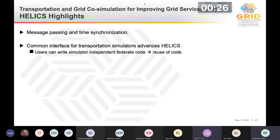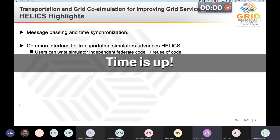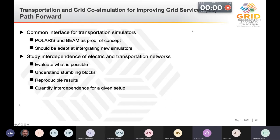We use Helix for message passing and time synchronization because these are different programs running separate processes. Helix allows us to exchange messages and synchronize with time without additional external effort. This use case also feeds into the Helix project because the common interface is a critical component for code reuse. For the common interface we're using two different transportation simulators — Polaris and BEAM — as proof of concept, but the interface itself is adaptable to additional simulators. The study will quantify the interdependence between the two different networks.